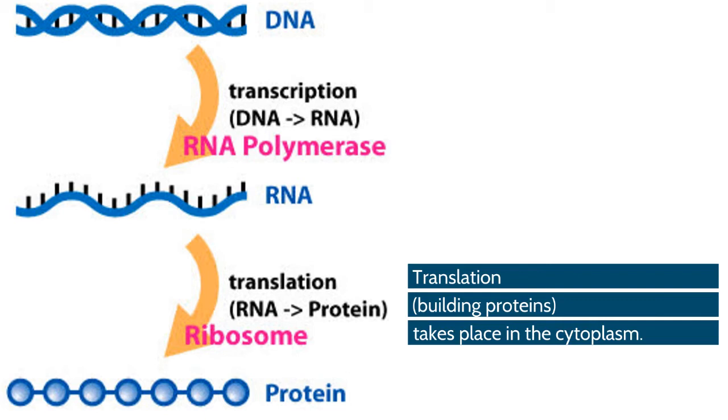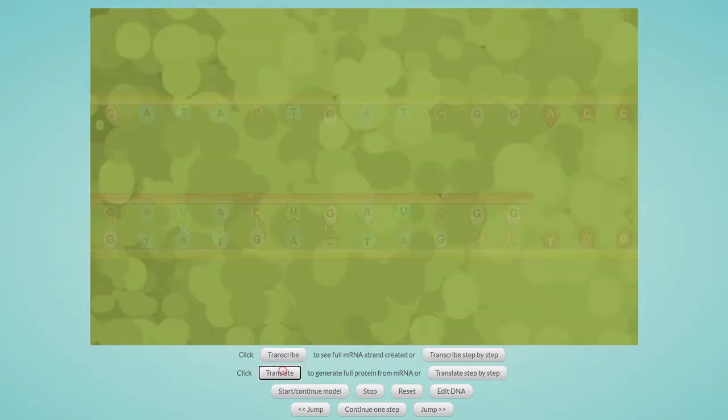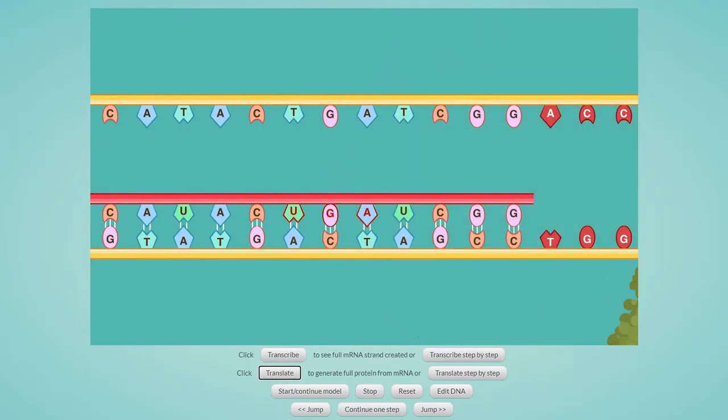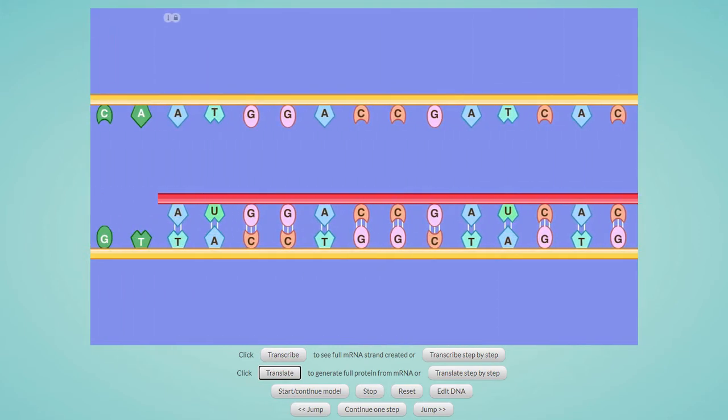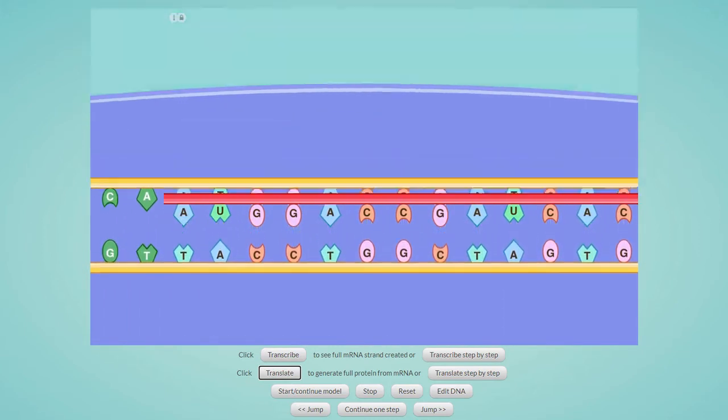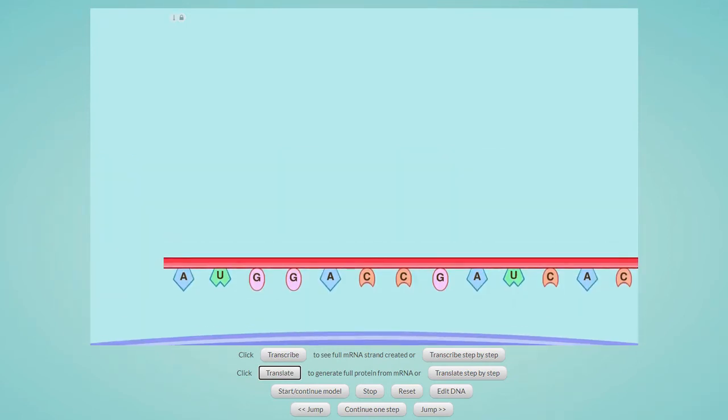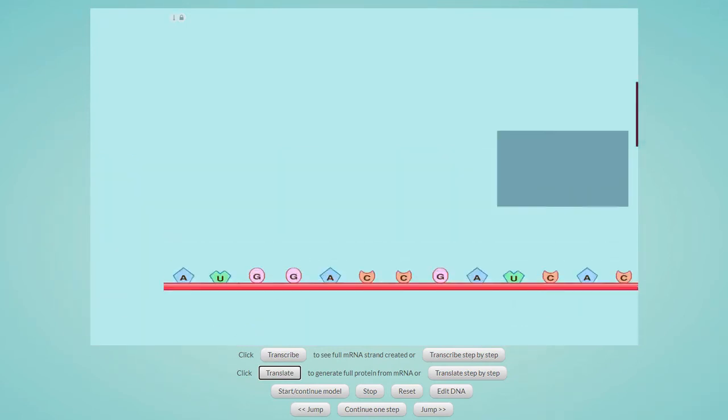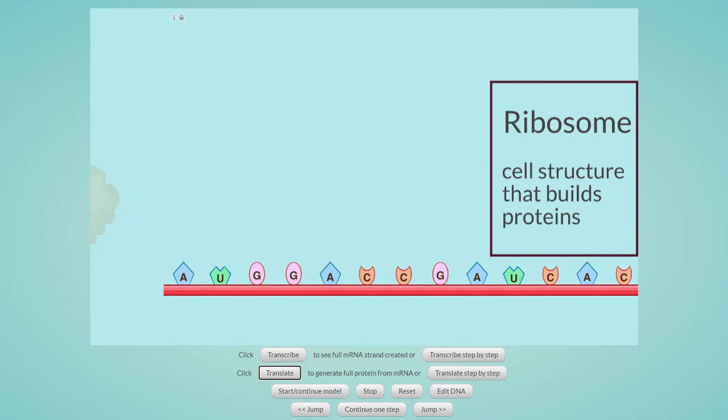Let's show this by clicking on the translate step by step button. This will start the process of translation or protein synthesis. The model shows the RNA molecule leaving the nucleus to go into the cytoplasm of the cell. You can see the two parts of the ribosome coming together.